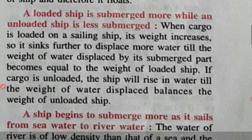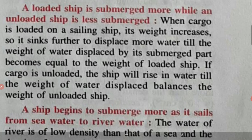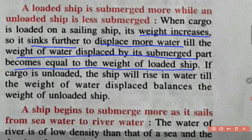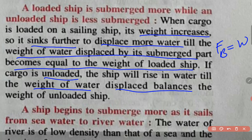A loaded ship is submerged more while an unloaded ship is less submerged. The loaded ship is submerged more because it has more weight. When cargo is loaded on a sailing ship, its weight increases, so it sinks further to displace more water, until the weight of the water displaced by the submerged part becomes equal to the weight of the loaded ship. Under this condition, the upthrust will be equal to the weight of the ship.